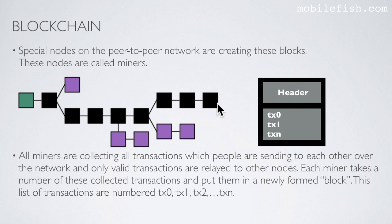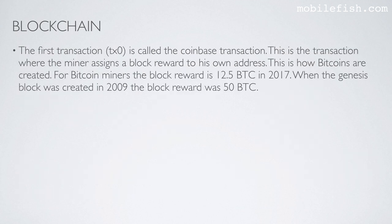If you look at this particular block it looks like this, and it contains a list of transactions. These transactions are numbered transaction 0, transaction 1, etc. The first transaction, transaction 0, is called the Coinbase transaction.